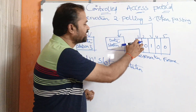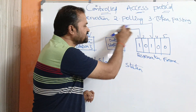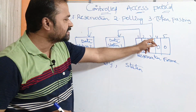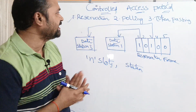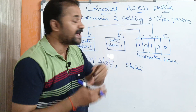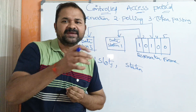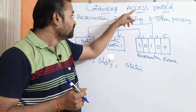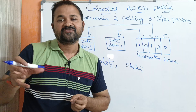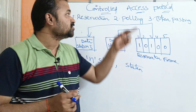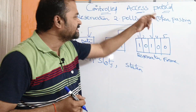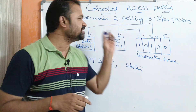First, station one can send the data, and next station three can send the data. So why is it called a controlled access protocol? The name itself specifies the meaning — which station accesses the frame, which station will transmit the frame — that should be controlled and decided based upon these three techniques. So this is about reservation.